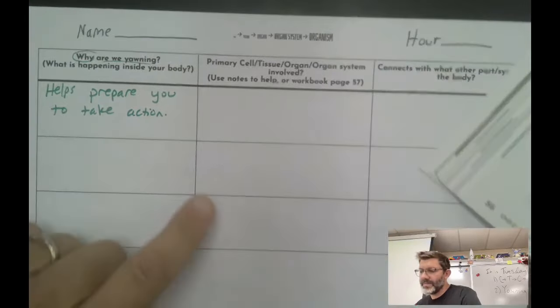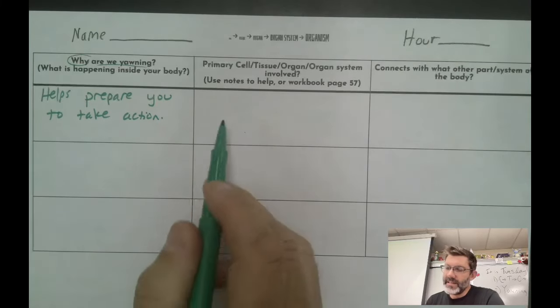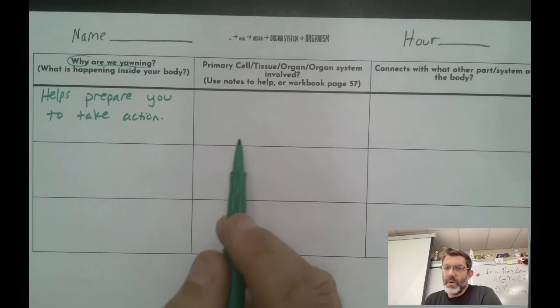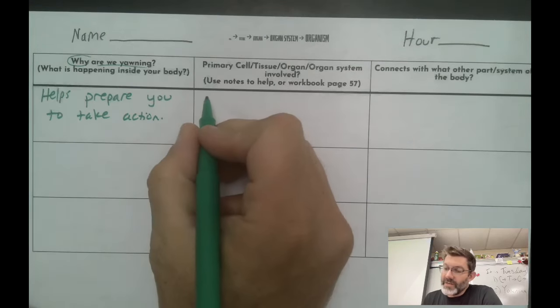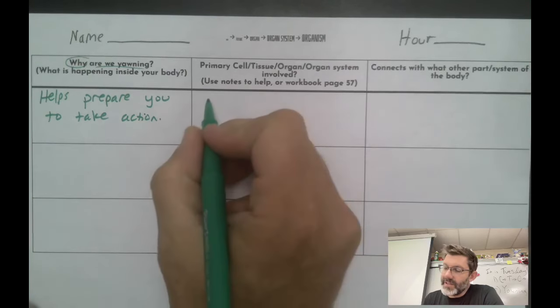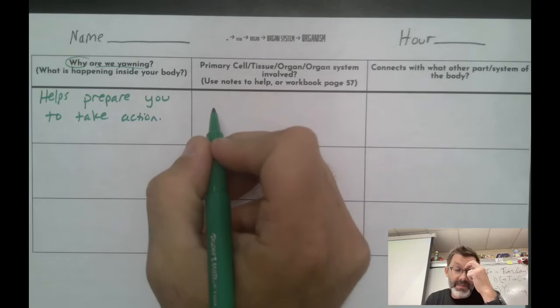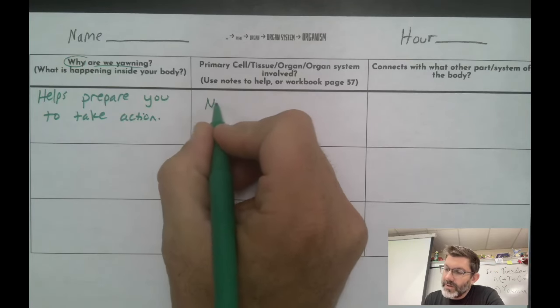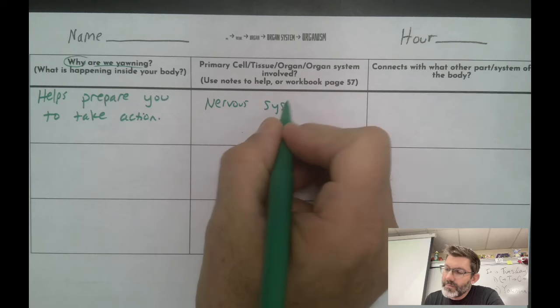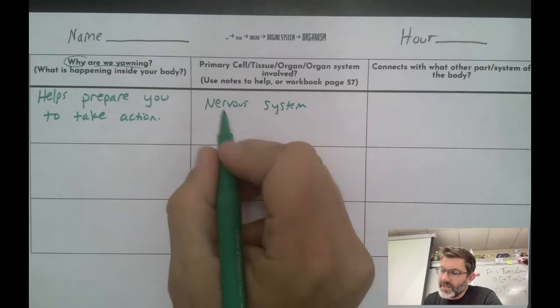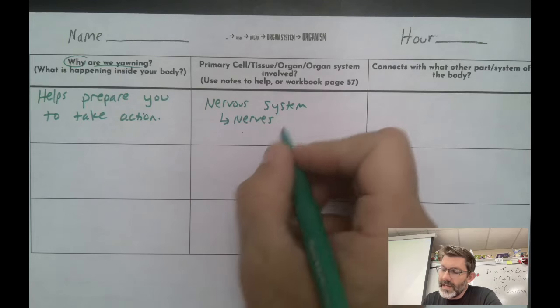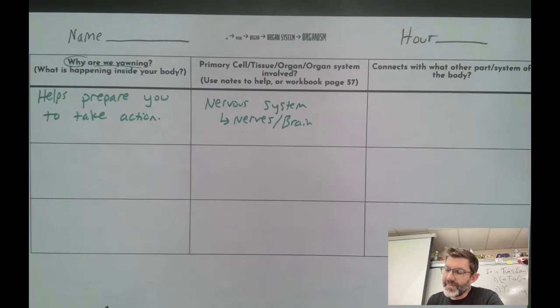So when I think about helping prepare you to take action, like let's say I'm getting ready to go run a race, I want my body to become very alert. So my nervous system, and this one's maybe one you could put for a lot of these, but the nervous system is going to be something that tells my body, hey you're getting ready to do something really big. So nervous system, that's also the nerves and the brain if you want to go with cells and organ.